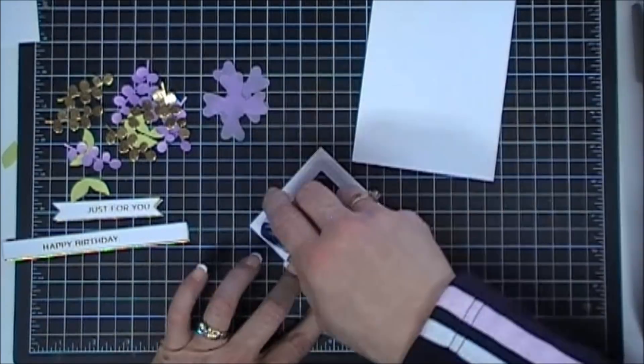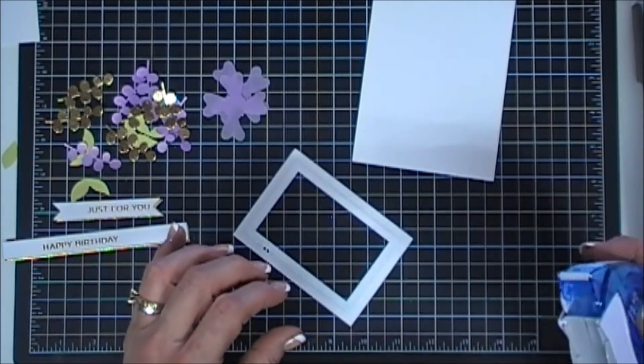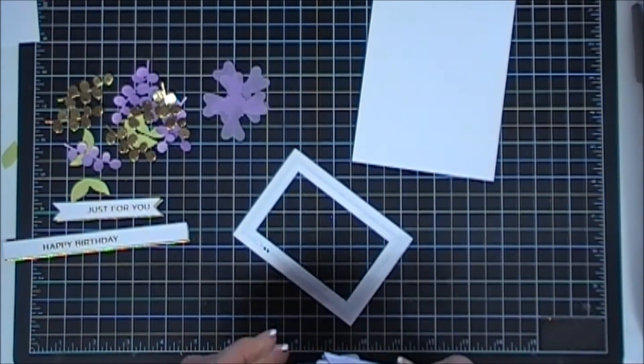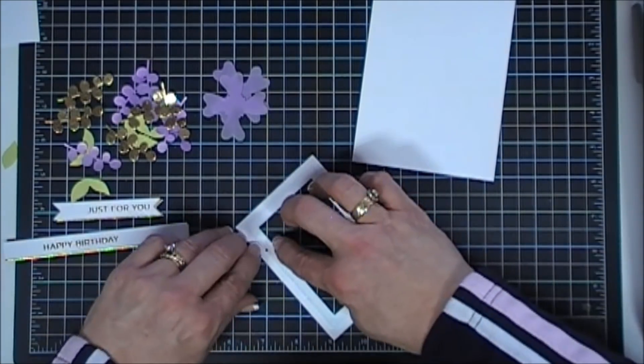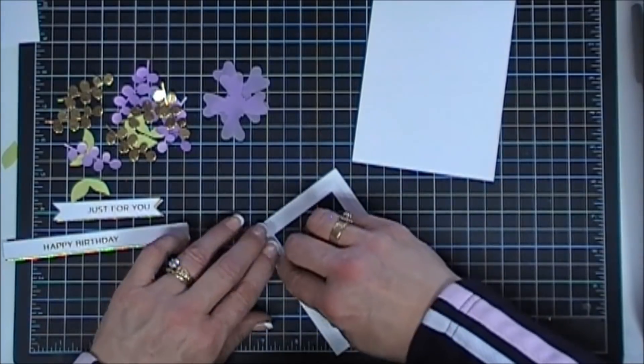Okay, for our first card, I'm going to add some tape behind my frame. When I did this, my tape runner actually pulled up a couple of the dots, so hindsight maybe I would have used double-sided tape instead.